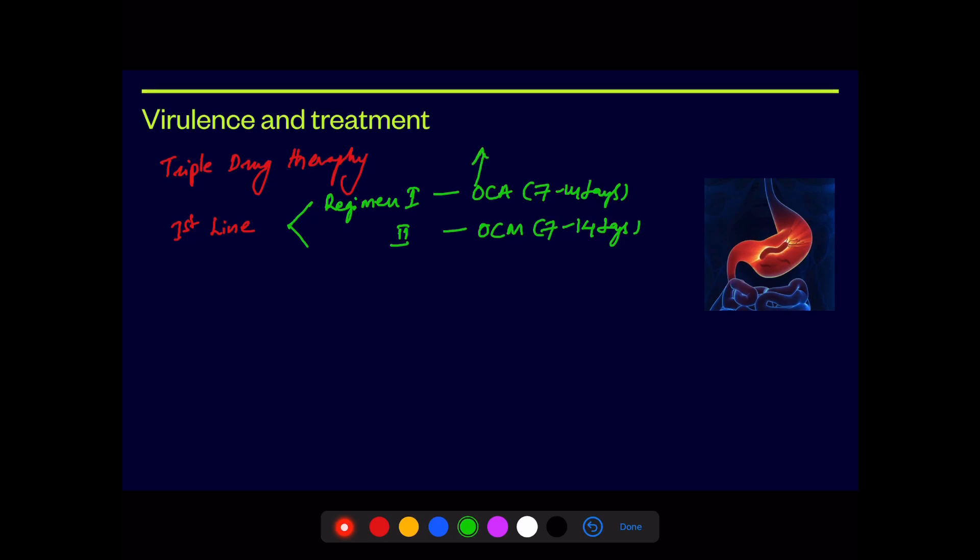OCA, in which O means omeprazole, C is clarithromycin, and A is amoxicillin. OCM is omeprazole, clarithromycin, and metronidazole. These are the two combinations used as first-line drugs. This is called triple drug therapy. The second line again includes one more regimen, that is regimen three, which includes OBTM, which is used for two weeks. This includes omeprazole, B for a heavy metal that is bismuth, T for tetracycline, and M for metronidazole.